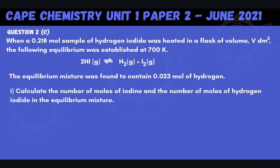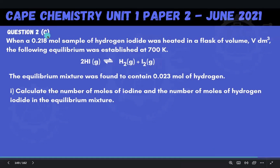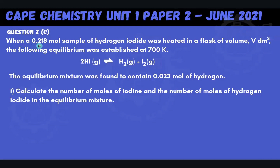Welcome back to another video with us here at LMDN STEM Academy. In this video, we will be working through the June 2021 Unit 1 Paper 2, and this was a question on chemical equilibria. So this was question 2, Part C, and it says: when a 0.218 mole sample of hydrogen iodide was heated in a flask of volume V dm³, the following equilibrium was established at 700 Kelvin. Here we have 2 moles of hydrogen iodide in the gas phase being equilibrated with 1 mole of hydrogen gas and 1 mole of iodine gas.